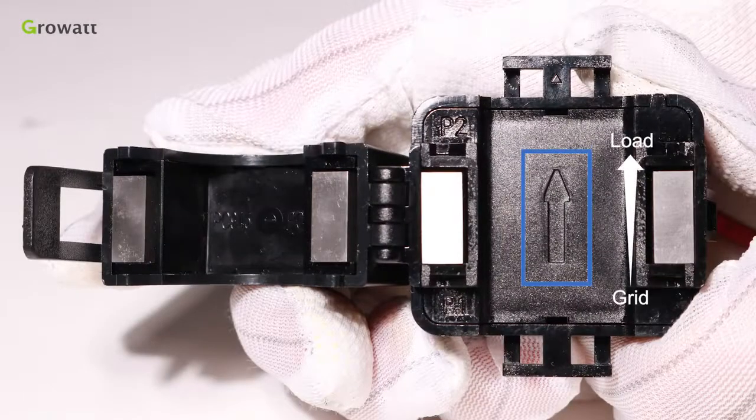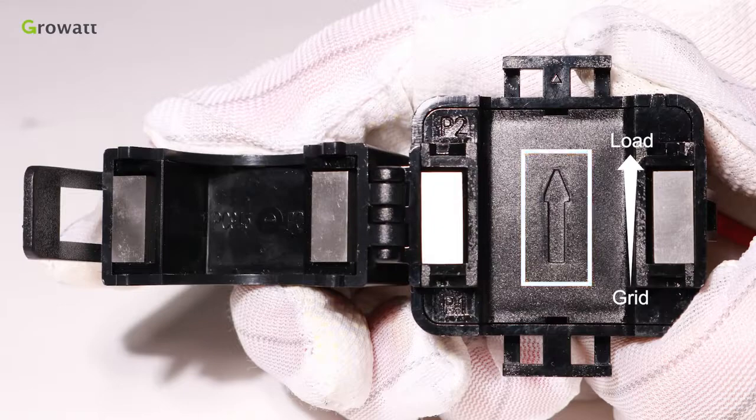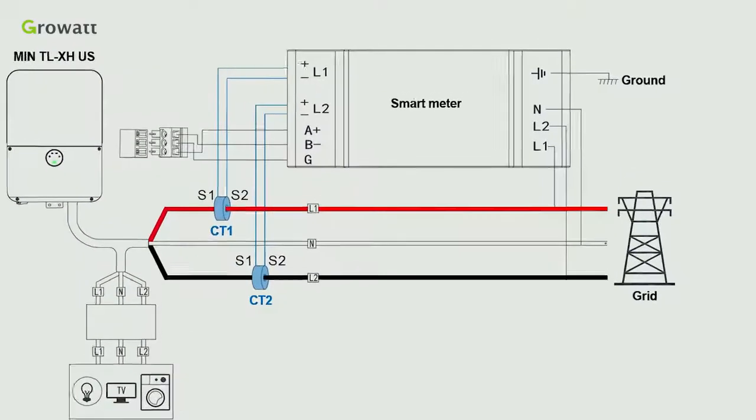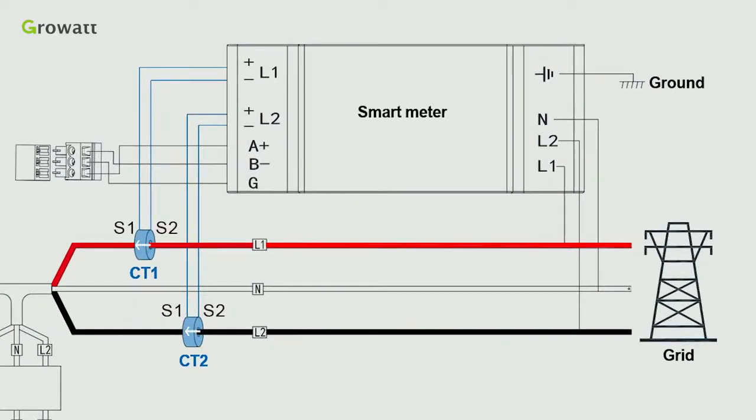Open the current transformer first and you can see an arrow labeled on it, which indicates the current direction from the public grid to user load.